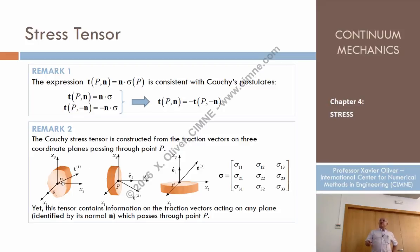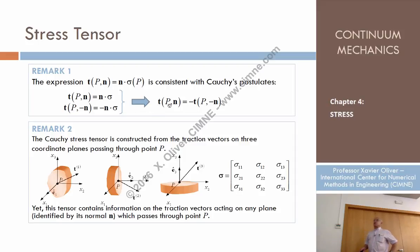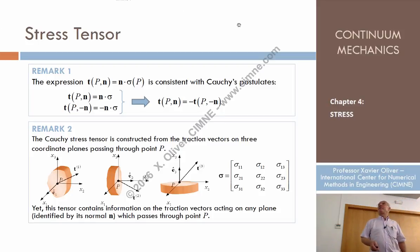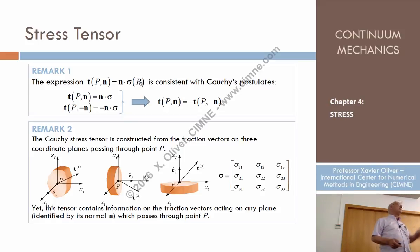The traction at a point following a certain direction — if I know the stress tensor at that point, I just multiply by the normal vector and obtain the traction. For a different normal on the same point, I change N and perform the operation to get the new traction components. Also, the second Cauchy postulate is verified: when I change the normal from N to minus N, sigma remains the same, N changes sign, and the traction changes sign — which confirms the action-reaction principle.